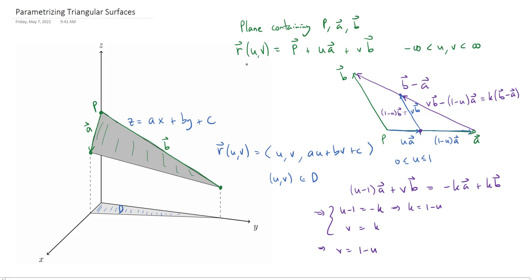So if I want the triangle, the corresponding triangle here, then the r of u,v is actually the same. Because it's just sitting inside this plane. But the question is, what happens with the u and the v? Well, we can let u go from zero to one. But now the v, well of course you could let it be zero, you can only let it go up to 1-u.